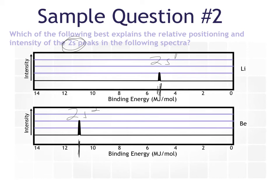They're both in the second shell — both the electrons are in the second shell — but the difference, and we're going to explore this a lot more, is protons. Lithium only has three positive charges pulling those electrons together; beryllium has four positive charges. Those four charges are going to make those electrons harder to remove, so the binding energy is going to increase because it's harder to take them off.